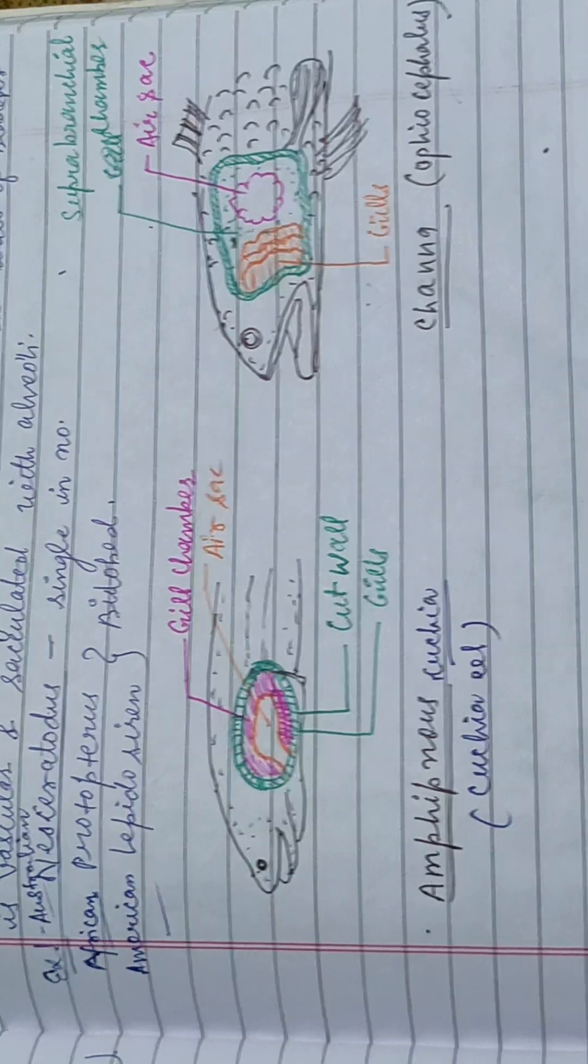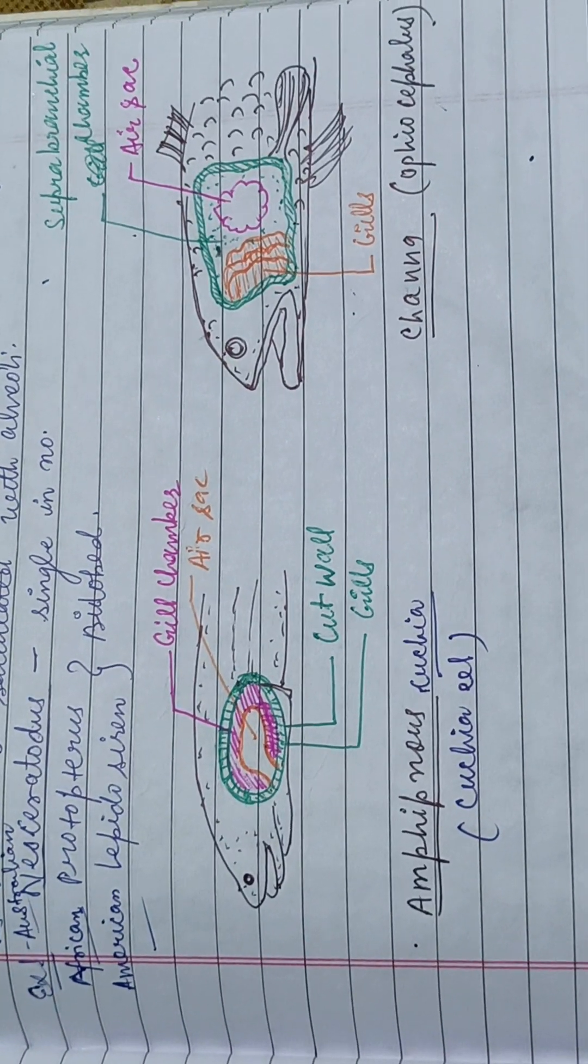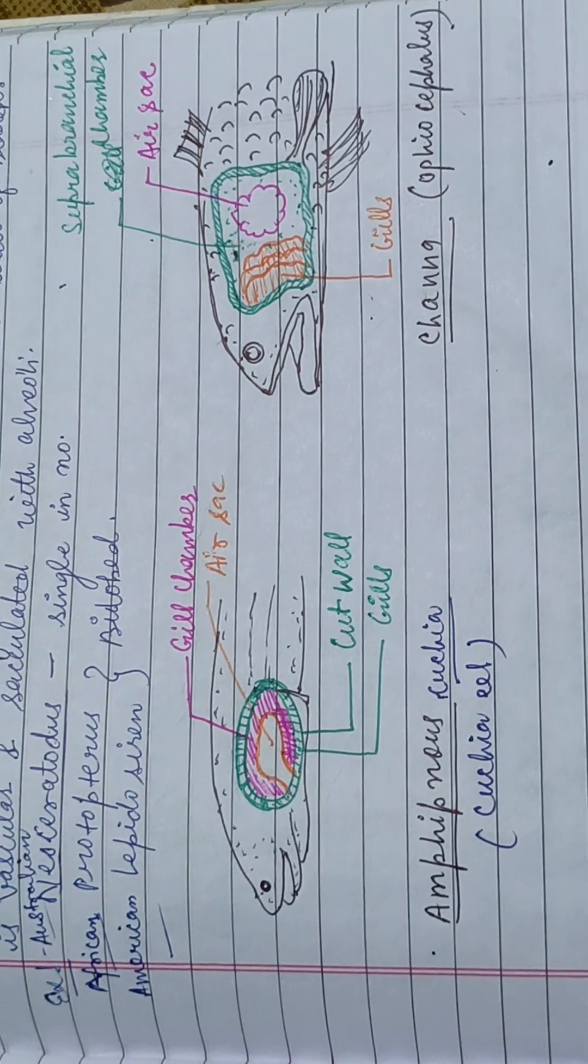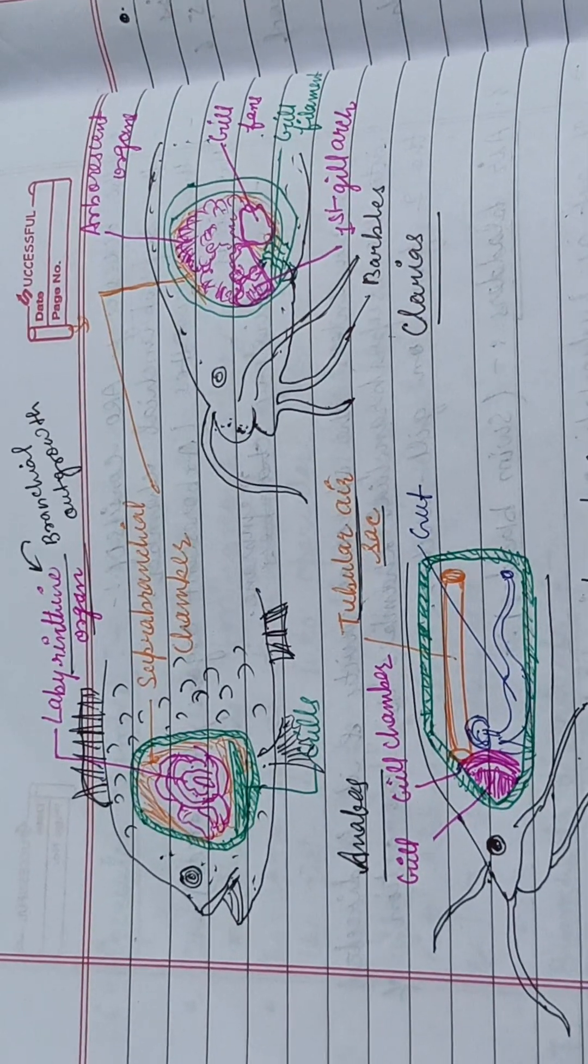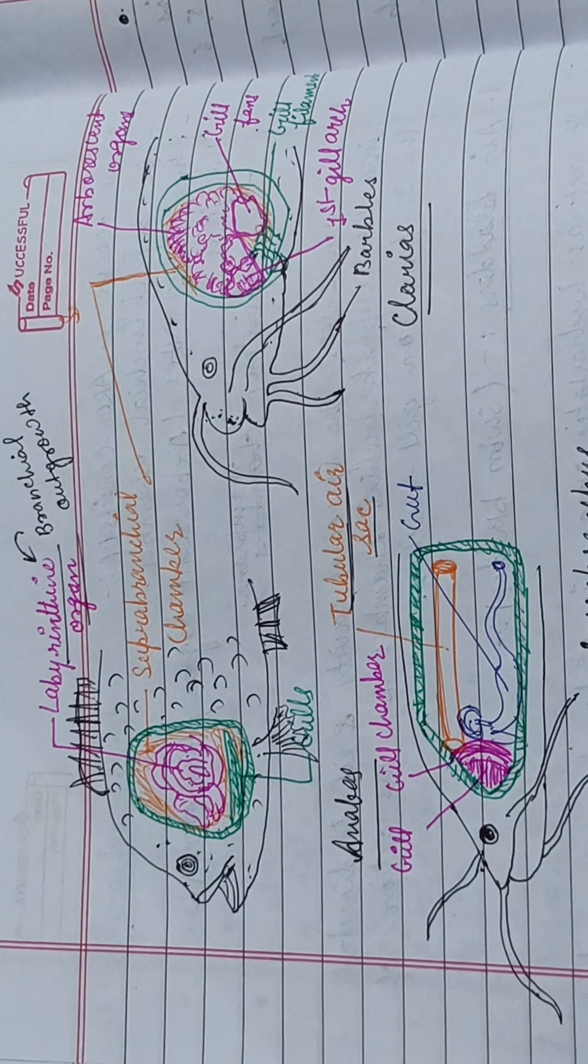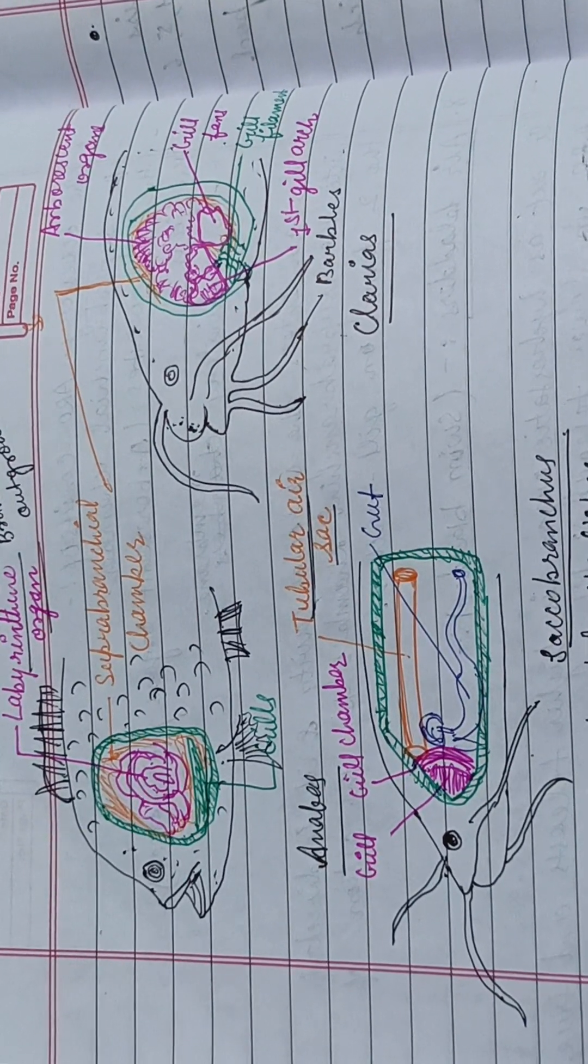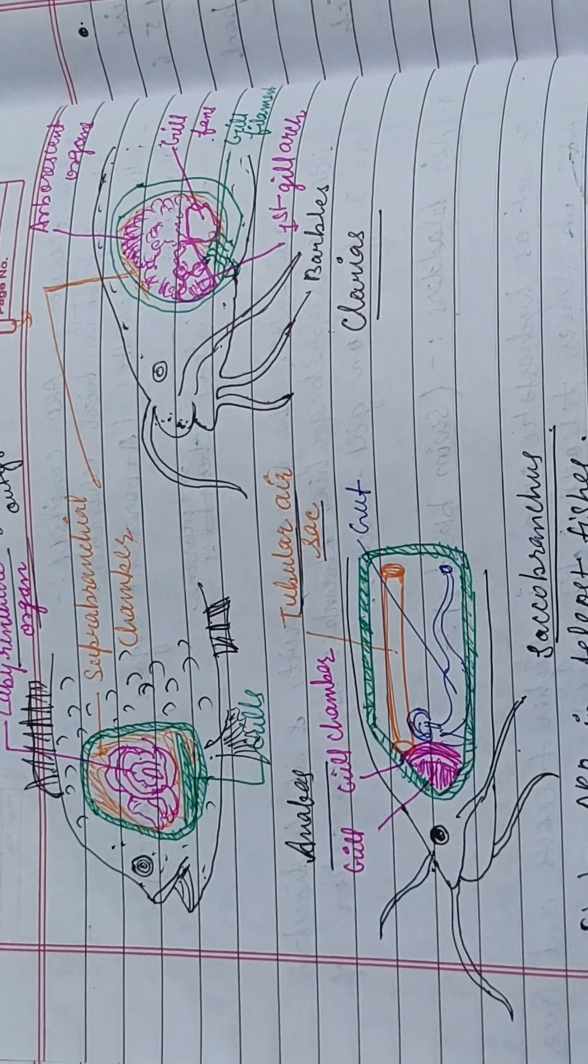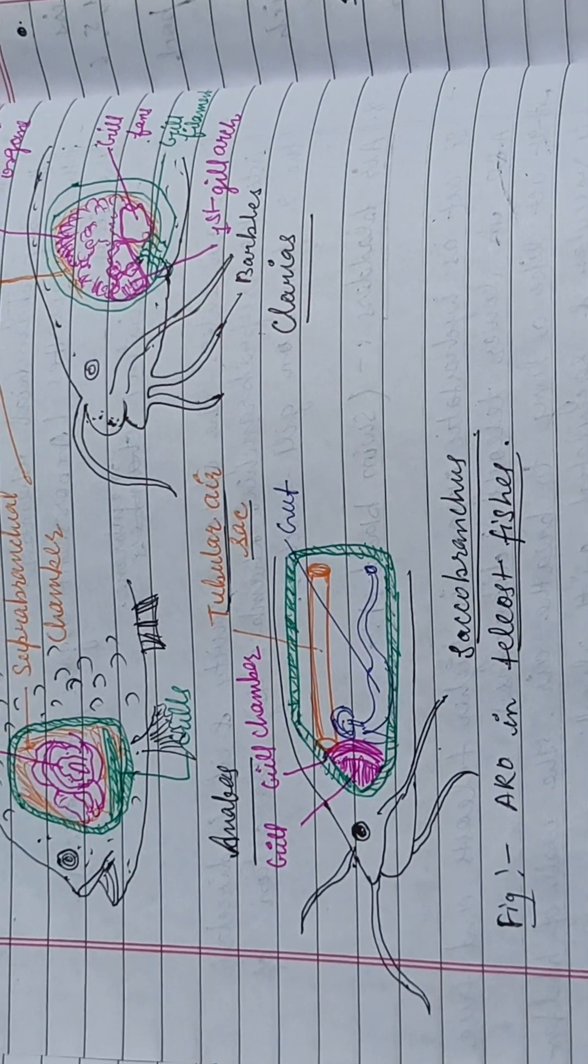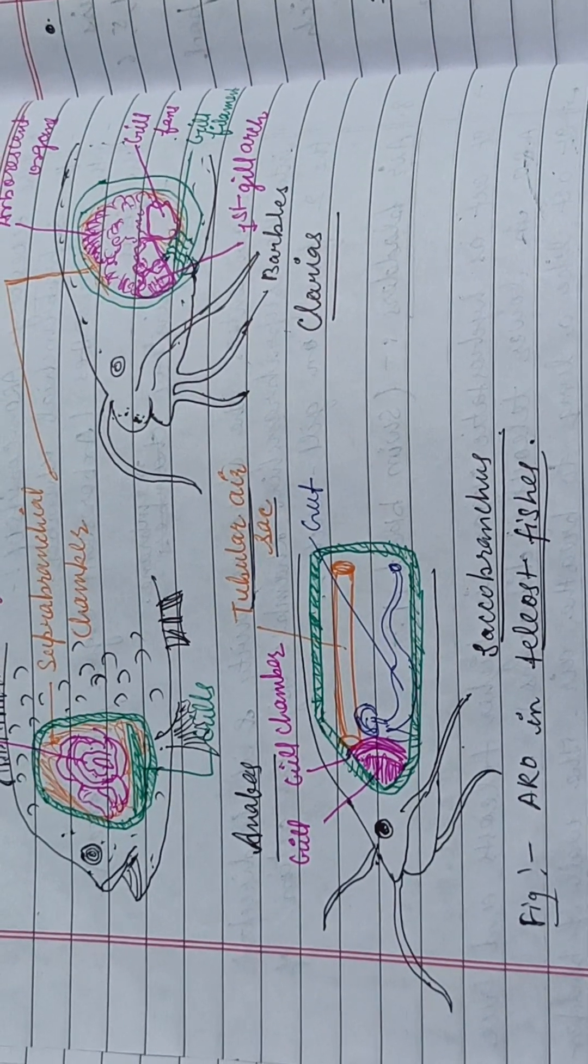Here are pictures of Cuchia eel Amphipnous cuchia, Channa punctatus also known as Ophiocephalus. Anabas testudineus contains the labyrinthine organs, an extension of the branchial outgrowth. Clarias batrachus has arborescent organs, fan-shaped gill-like structure filaments. Heteropneustes fossilis has saccobranchus, in which the gill chambers are in the form of tubular air sacs.